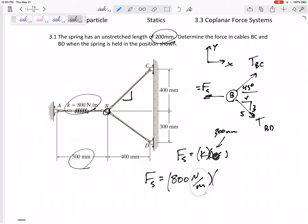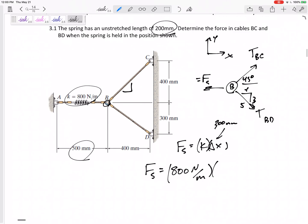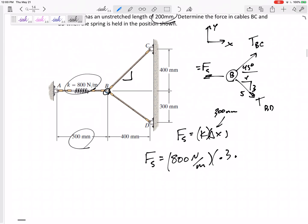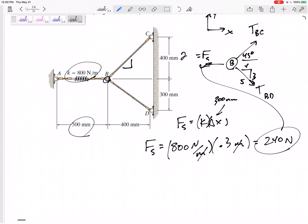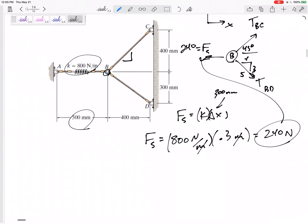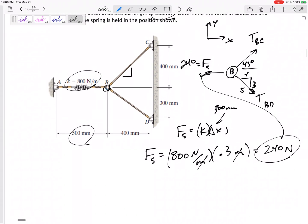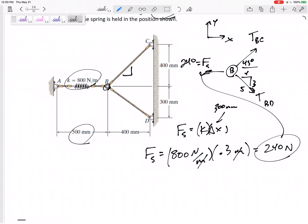Be careful with my units though, that spring constant is newtons per meter, so this needs to be in meters, 0.3 meters. Look, my units work out. Yeah, I'm left with newtons, 240 newtons. So the force in this spring is 240 newtons. All right, so now I've done everything I can. It's in equilibrium, right? This is statics. The sum of the forces equals zero because it's not accelerating.